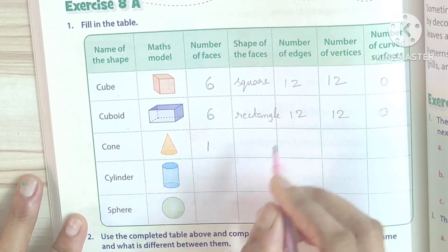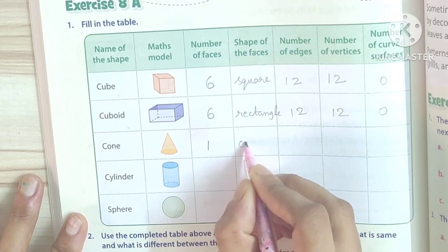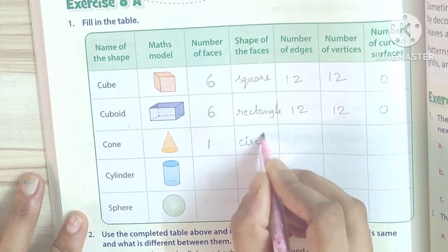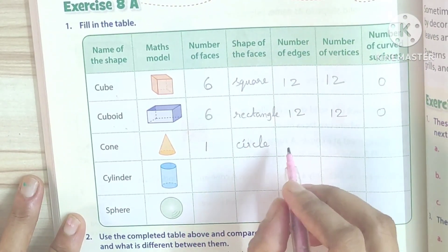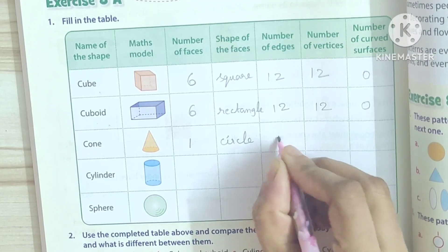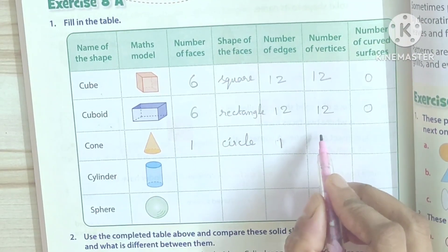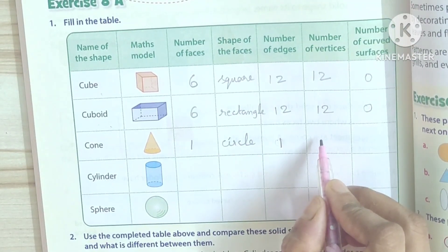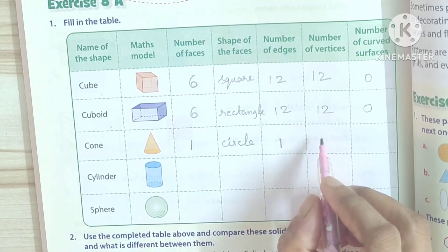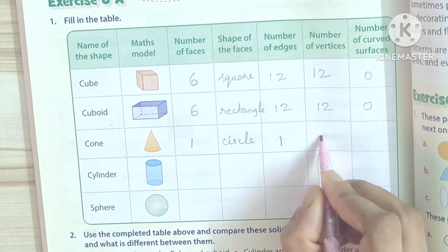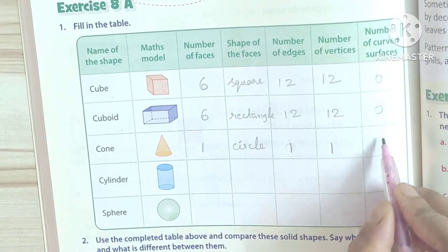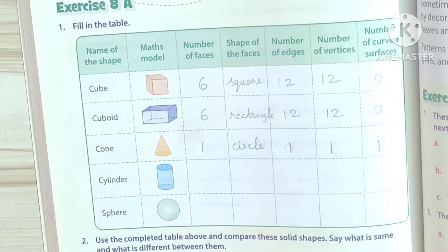Cone. Number of faces: 1. Shape of face: Circle. Number of edges: 1. Number of vertices: 1. Curved surface: 1.